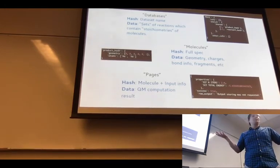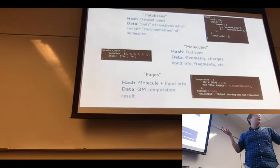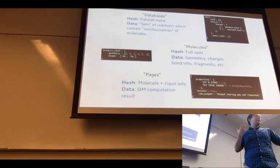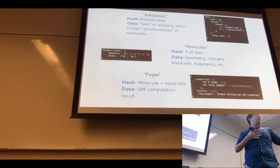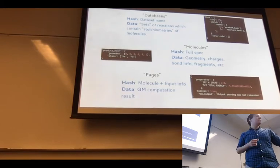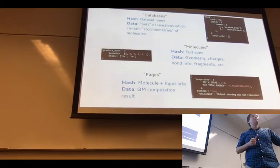This approach means I can have arbitrary methods attached to these molecules and pages. So if I want B3LYP/aug-cc-pVDZ, I can pull that out; if I want PBE/aug-cc-pVDZ, I can do that too. This works extremely well with quantum chemistry data.